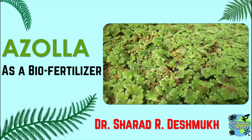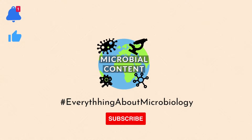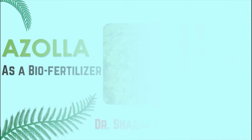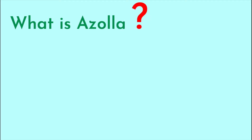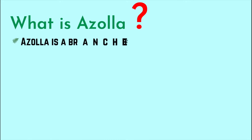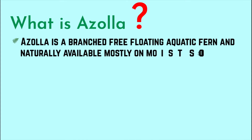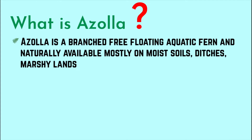We are going to start a new topic — Azolla, which is used as a biofertilizer. Azolla is a tiny aquatic fern found in swamps and soft, wet soils. It is a branched, free-floating aquatic form naturally available mostly on moist soils, ditches, and marshlands.